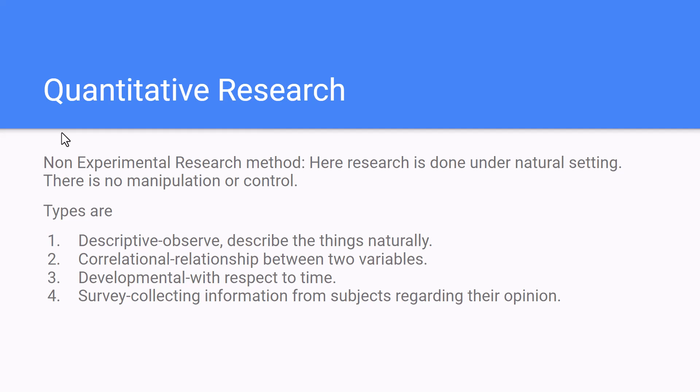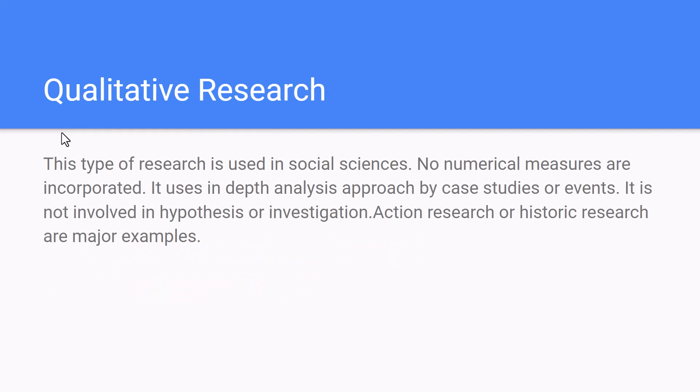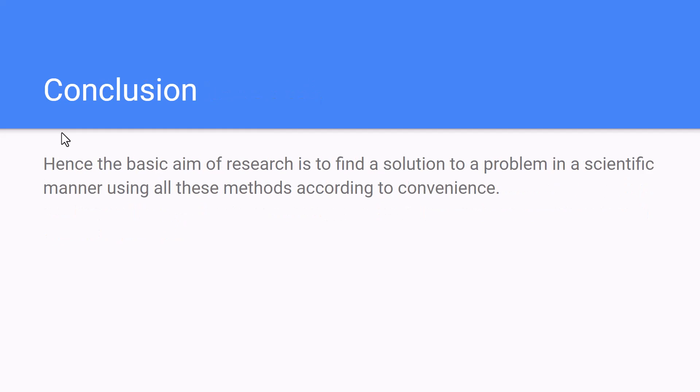Qualitative research is used in social sciences and is not related to numbers. Important examples of qualitative research include case studies, action research, and historical research. The basic aim of all research is to find a solution to a problem in a scientific manner using the most appropriate method.